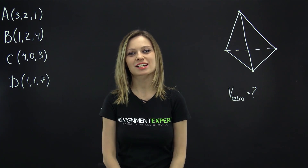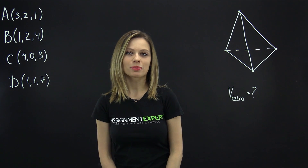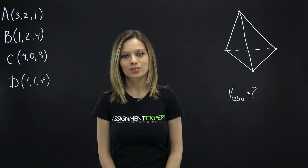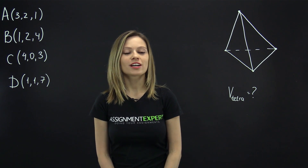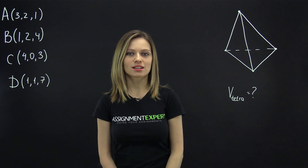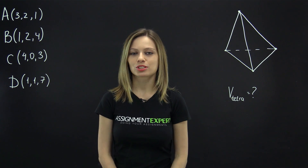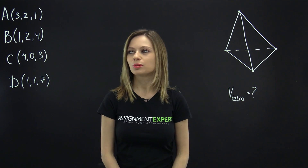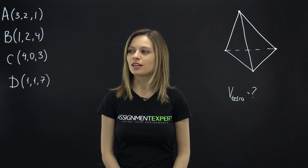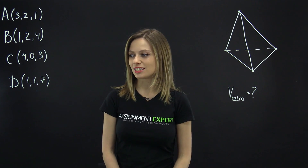Hi, this is a salmon expert. In this video, we'll talk about the scalar triple product of the vectors. Our task is as follows: we need to find the volume of a tetrahedron whose vertices are the points A, B, C, and D with given coordinates.